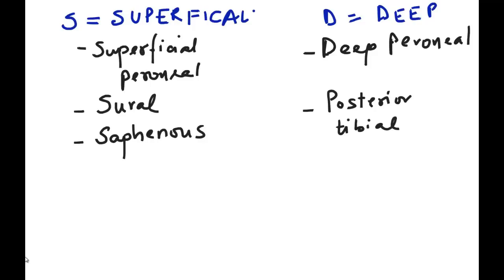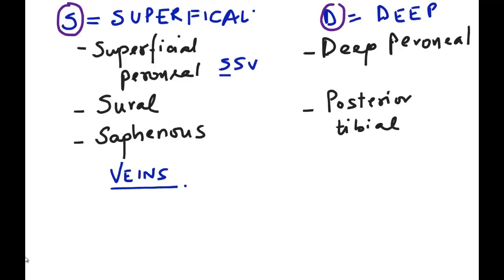It's important to know the properties of these nerves. Nerves beginning with 'S' are superficial, whereas nerves beginning with 'D' are deep. Therefore, the superficial peroneal nerve, sural nerve, and saphenous nerve are superficial and generally accompany veins. The superficial peroneal accompanies the short saphenous vein and the saphenous nerve accompanies the long saphenous vein. The deep nerves — the deep peroneal and the posterior tibial — accompany arteries, as arteries are deep structures.